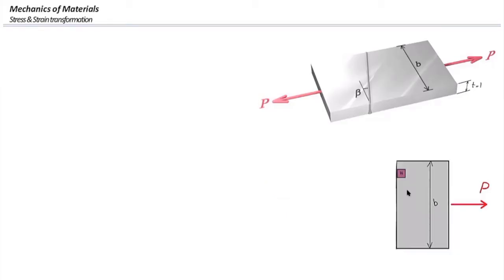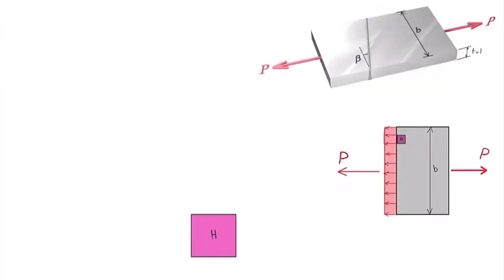I'm going to consider one stress element shown here in purple along the vertical cut. In order to determine the state of stress at that point, we use a free body diagram to determine how much the internal force is. That internal force produces internal axial normal stress along the cut section. If I take out that stress element and enlarge it, there will be one normal stress on the left surface where that element is being cut.